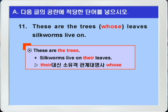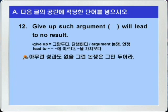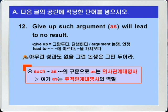이 문장은 'These are the trees'라는 문장과 'Silkworms live on their leaves'라는 문장에서 the trees와 their leaves의 their가 서로 공통인데 their가 소유격이니까 their 대신에 소유격 관계대명사 whose가 사용되어서 whose leaves를 선행사 the trees에 연결시킨 형태가 되겠습니다. 정답을 확인해보고 12번으로 가죠. 12번입니다. 선행사 argument 앞에 such가 있으니까 블랭크에는 의사관계대명사 as가 들어가면 되겠습니다.